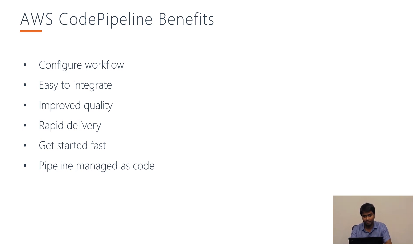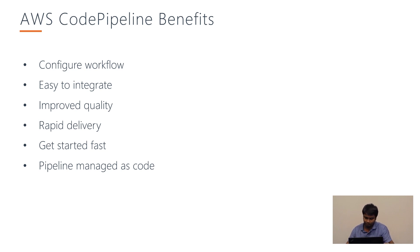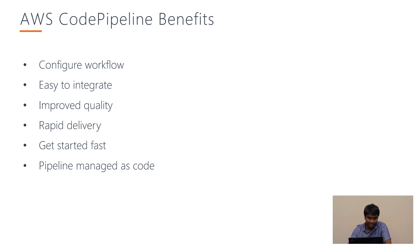AWS CodePipeline benefits: one of the main benefits is we can configure the workflow with a visual editor for our release pipeline and easily share it with management. It is easy to integrate with other AWS tools and third-party tools. We can have rapid delivery, get started fast with AWS templates, and it's pretty easy to use via the console. Another benefit is we can manage the pipeline as code and even have the pipeline deploy itself as code from the repository.